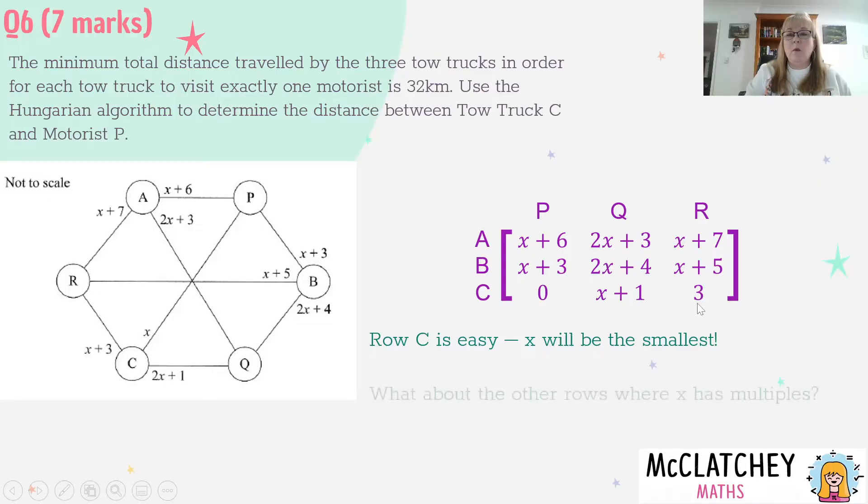But the question is what about the other rows where X has multiples? How do I know if X plus 6 is greater or smaller than 2X plus 3? Think about the logic. What if X was equal to 1 kilometre? Well if X was 1, this value would be 7. But this could be smaller - 2 times 1 is 2 plus 3 which is 5. But what if X was 10? Well then this would be 16 and this would be 23. Well there's a clue in the question.